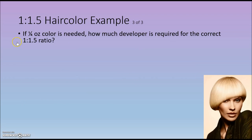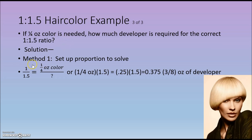In the last example, if one-half ounce of color is needed, how much developer is required for the correct 1 to 1.5 ratio? Using the proportion method, we set the 1 to 1.5 ratio equal to the known amount of color over the unknown amount of developer. The numerator is multiplied by one-fourth, so likewise we multiply the denominator by one-fourth. One-fourth times 1.5 — or using the decimal equivalent, 0.25 times 1.5 — results in 0.375 ounces, which is equivalent to 3 eighths of an ounce of developer.